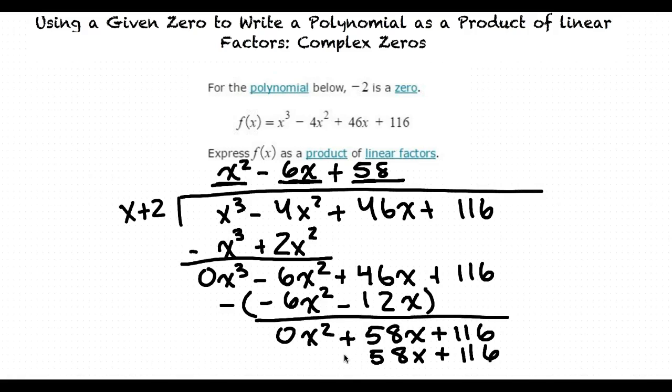If we subtract this, like we did in the previous steps, we get 0. So our function Q(x) is x squared minus 6x plus 58.